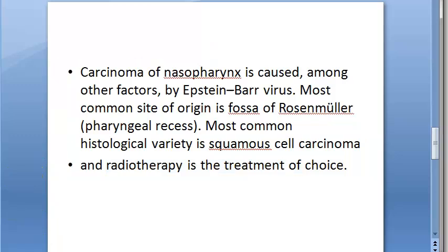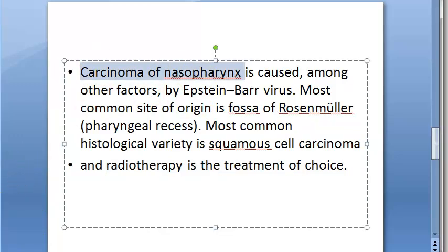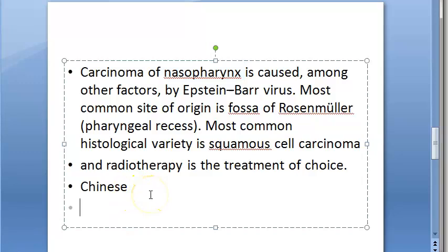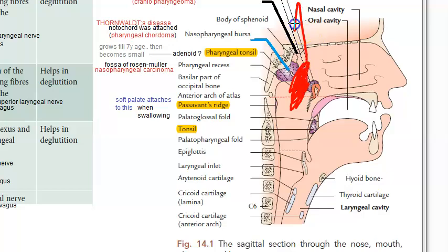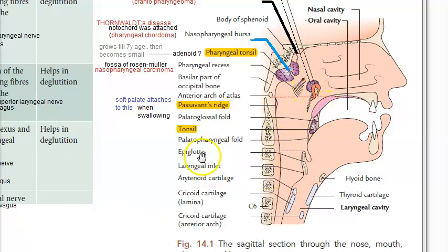The treatment will be radiotherapy. Nasopharyngeal carcinoma is seen more commonly in Chinese people. This can also spread to intracranial structures. There will be carcinoma here and it is going to spread upwards into intracranial structures. Foramen lacerum and foramen ovale will provide direct routes for spread to the middle cranial fossa. It can also spread to the cervical lymph nodes.